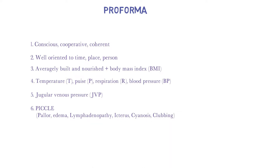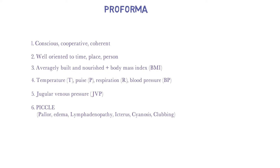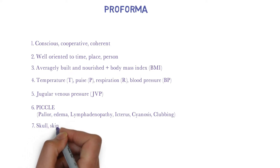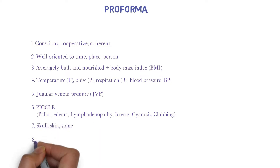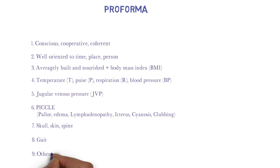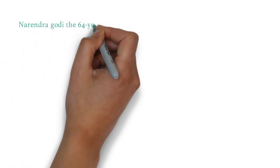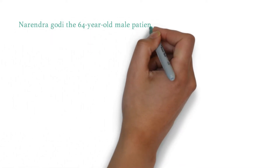Then we will check for PELICS — this is the mnemonic for Pallor, Edema, Lymphadenopathy, Icterus, Cyanosis, and Clubbing. Then we will check skull, spine, and skin. After that, gait. And at the end, in specific cases, we have to check for specific signs. This is all about the pro forma, and it is the continuation of our previous topic.